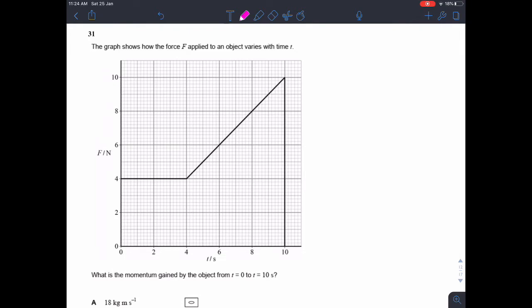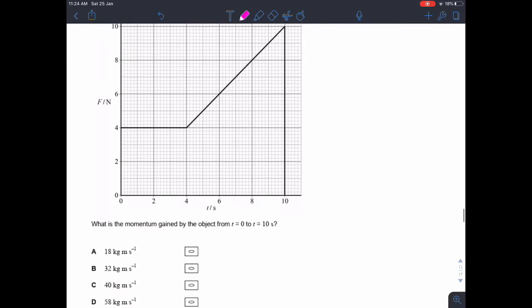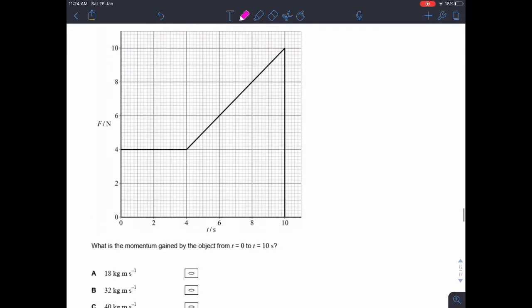Question 31. The graph shows how the force F applied to an object varies with time t. We've got a force time graph and we want the momentum gained by the object from t0 to t10.